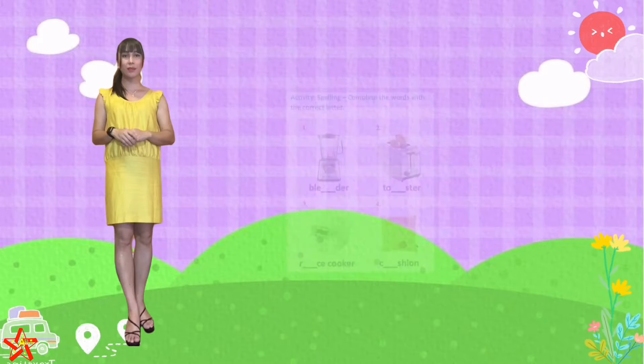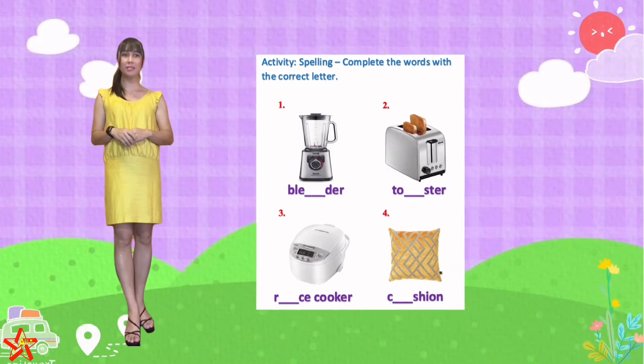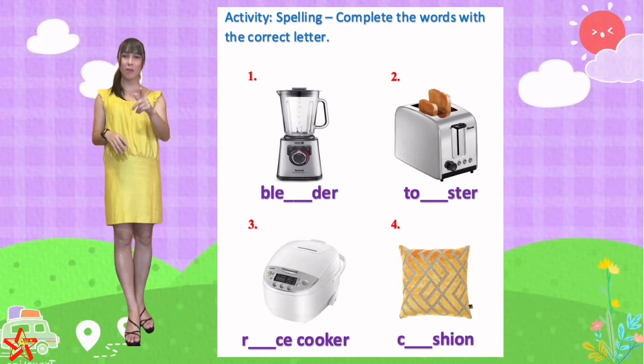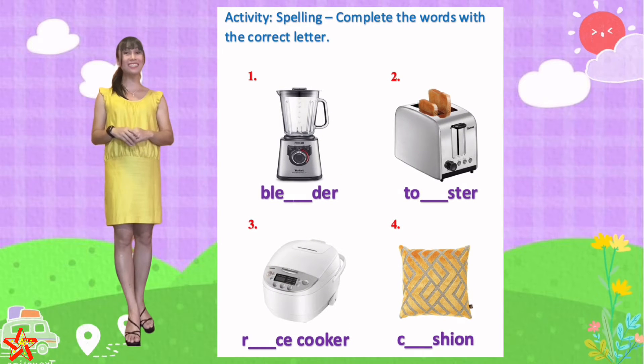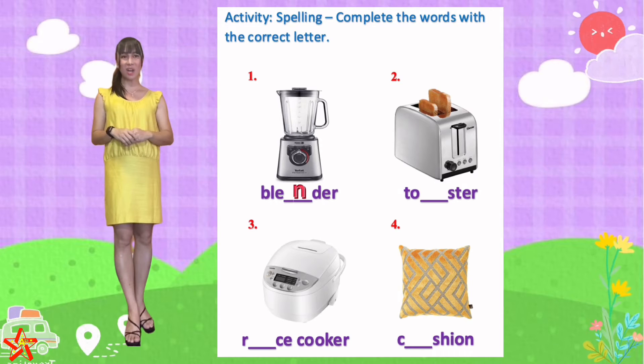We learned the four common household items. We have blender, toaster, rice cooker, and cushion. Number one, this is blender. What is the missing letter? The missing letter is N — B-L-E-N-D-E-R.